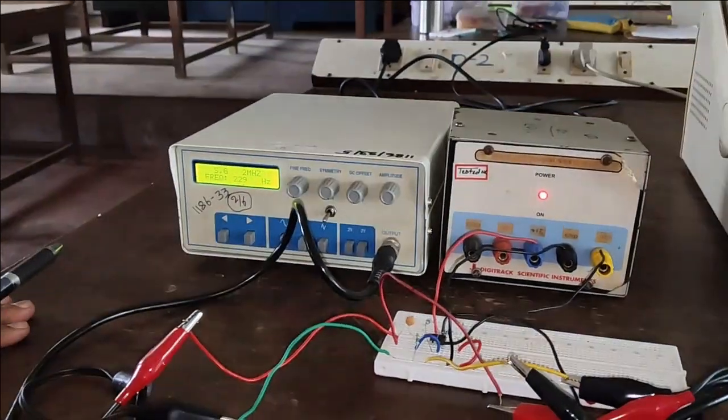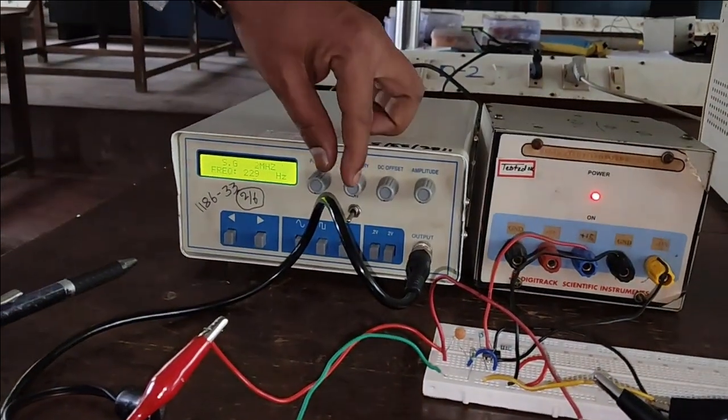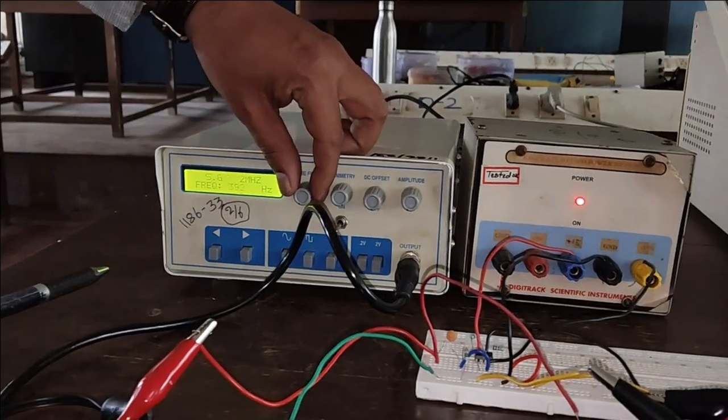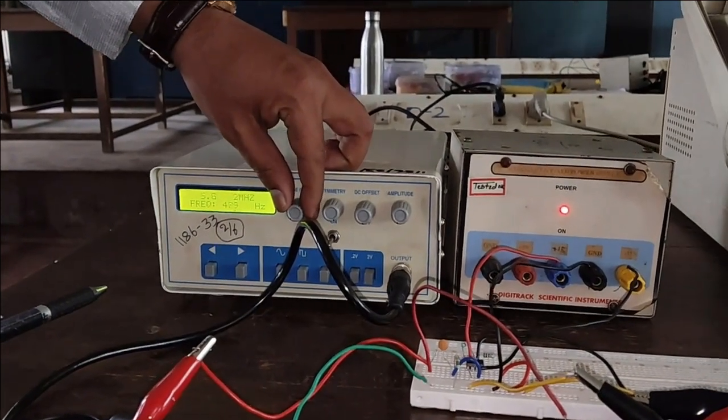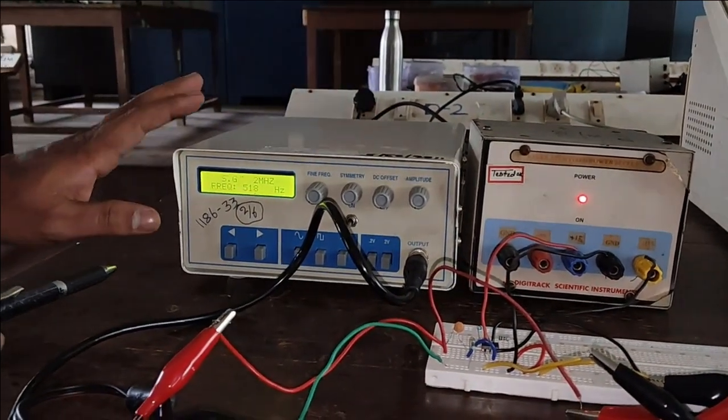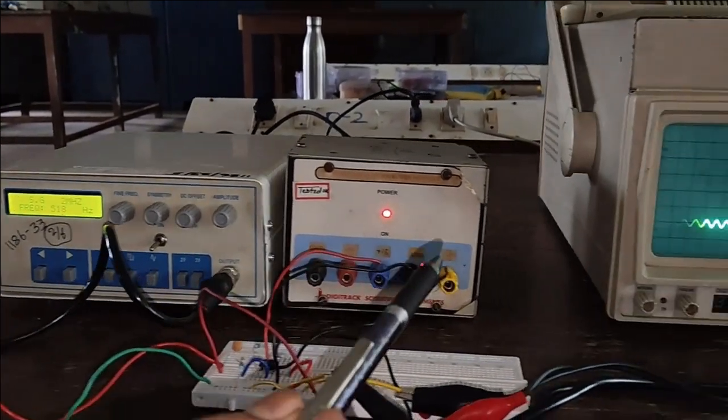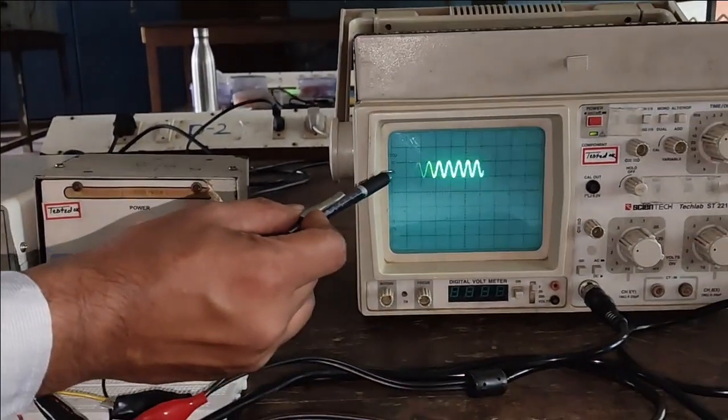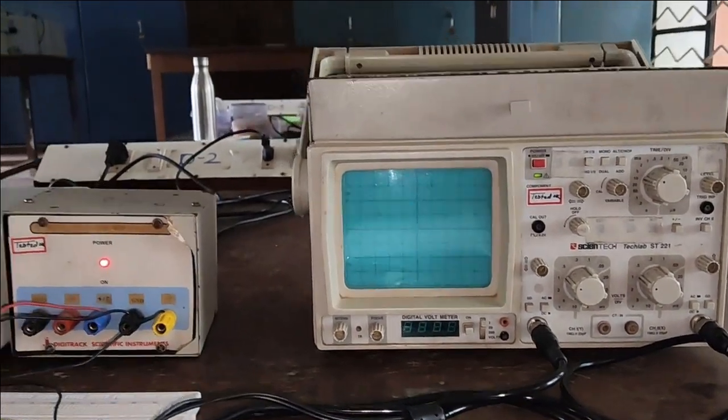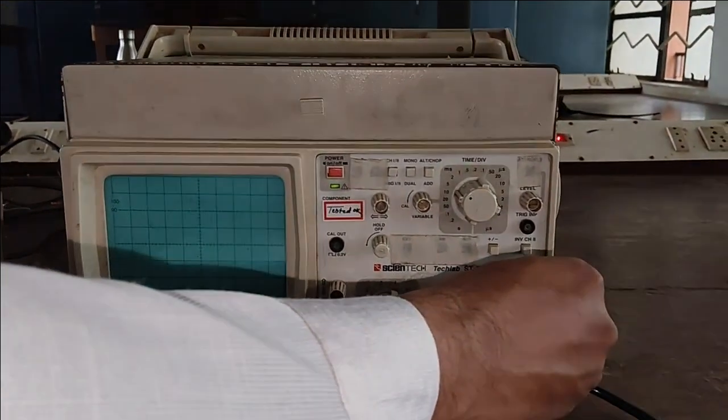Here I have set the frequency as 500 Hz. Once I set it to 500 Hz, here we can observe that the input voltage is 1 volt, but the output voltage is less than 1 volt.